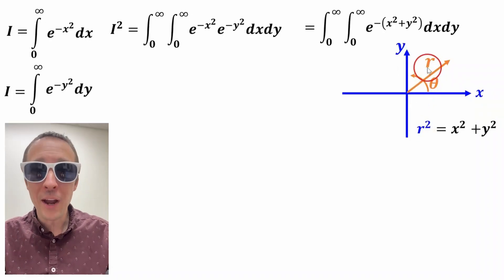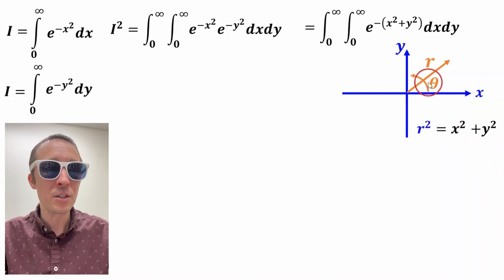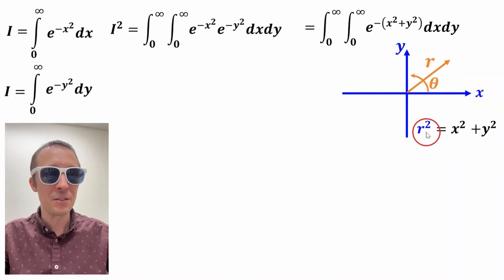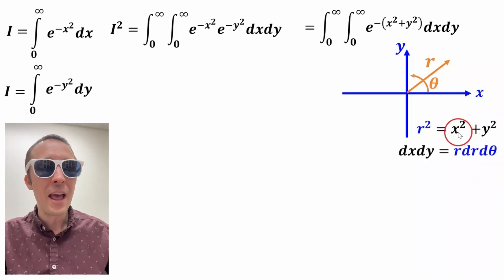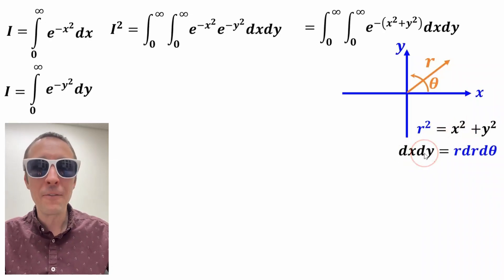So r squared in terms of x squared and y squared using the Pythagorean theorem is just this right here. r squared equals x squared plus y squared. And the dx dy for polar coordinates is r dr d theta.